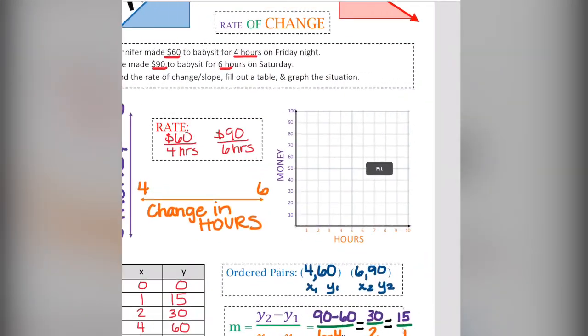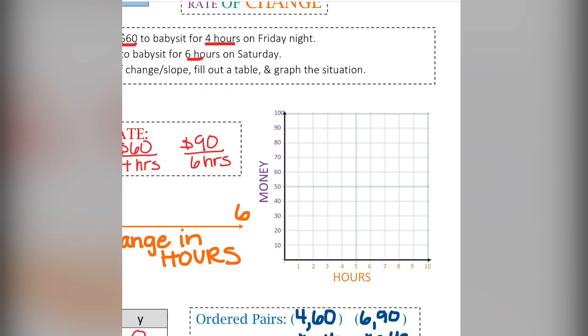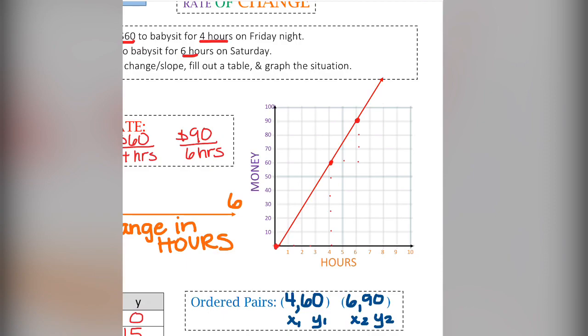Now that we have a table, we can do our graph. And we can show the steepness or the slope of this line. We're going to go ahead and graph the points that we were given. We're going to go over to 4 hours and up to 60. And we're going to then go over to 6 hours and go up to 90. We can show this linearly. And now I'm going to show you the right triangles we're building. We went over 4 and up 60. Then we went over 2 and up 30 more.